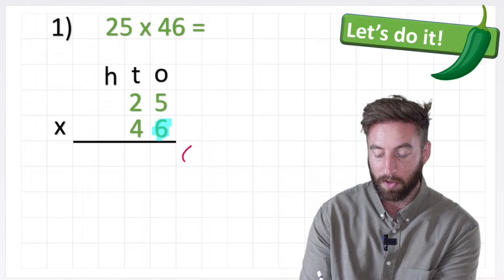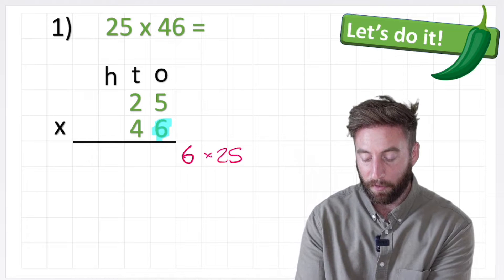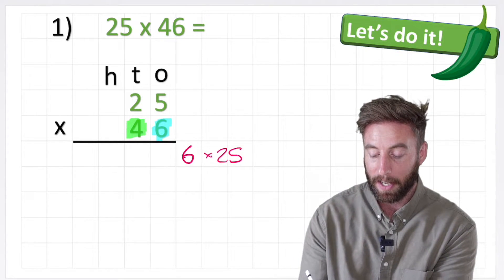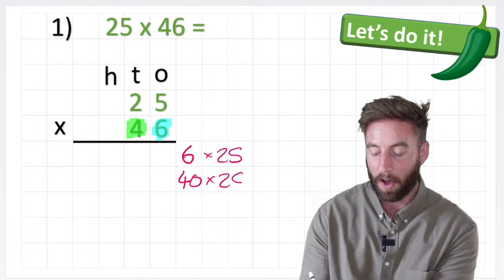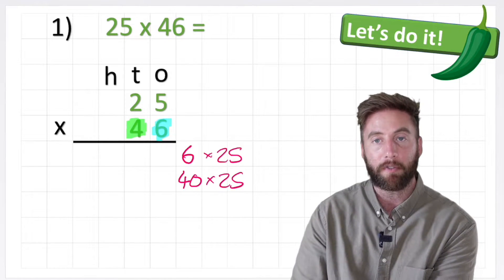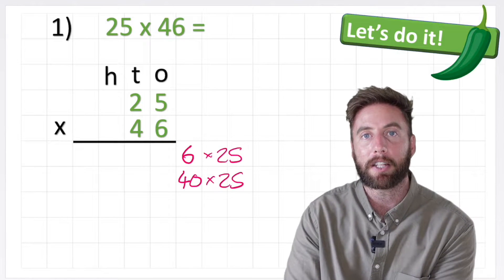So this answer row is going to be answering 6 times 25, and then I can look at the 4, which is actually not just a 4, it's a 40, and I'm then going to do 40 times 25. So that when I add my 6 times 25 to my 40 times 25, I should get the total answer. Okay, now I'm ready to begin.